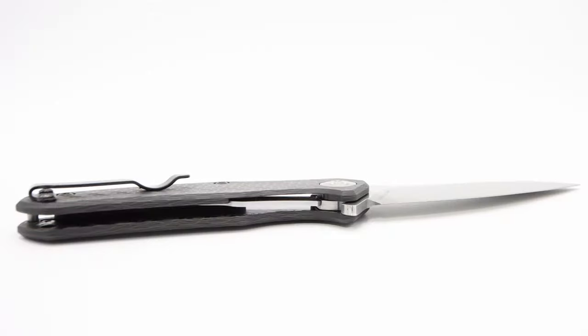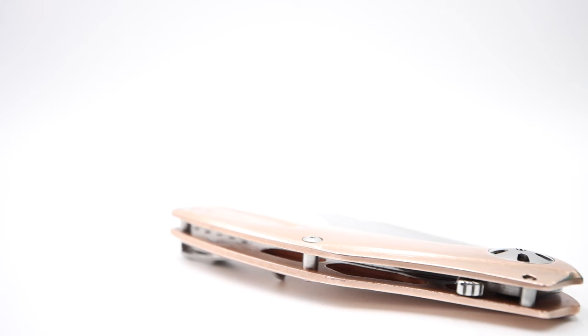The ZT utilizes a tab locking system which keeps the handle's thickness at 0.4 of an inch, while the Natrix handle's thickness is 0.4 of an inch.